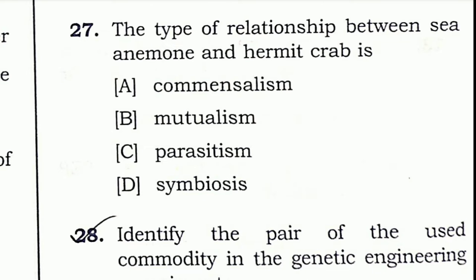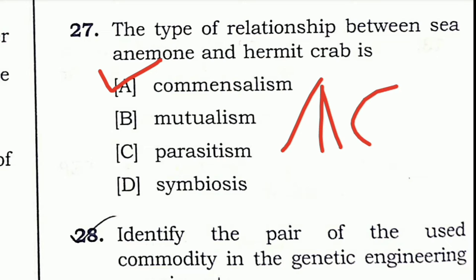Question 27: The type of relationship between sea anemone and hermit crab is commensalism. Commensalism is a type of symbiosis where one organism is benefited and the other is neither benefited nor harmed.